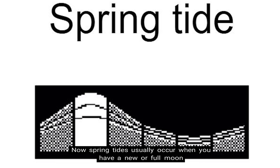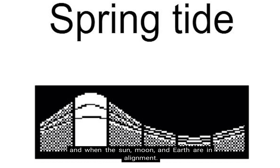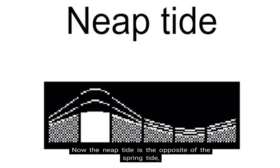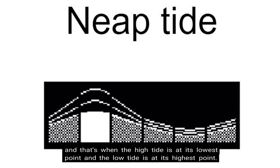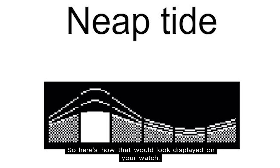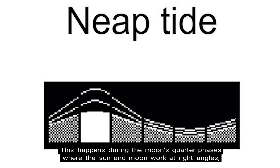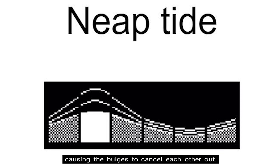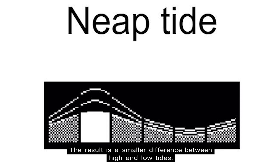Spring tides usually occur when you have a new or full moon and when the sun, moon, and earth are in alignment. Now the neap tide is the opposite of the spring tide — that's when the high tide is at its lowest point and the low tide is at its highest point. Here's how that would look displayed on your watch. This happens during the moon's quarter phases where the sun and moon work at right angles, causing the bulges to cancel each other out, resulting in a smaller difference between high and low tides.